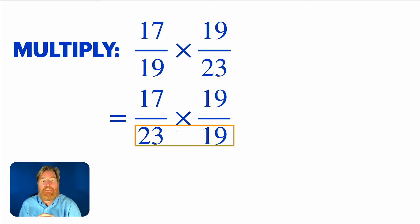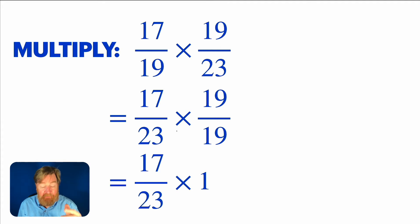But take a look at what happens when we commute those two bottom factors. Nineteen-nineteenths, guys, that's just one, right? Well, if that's just one, then seventeen twenty-thirds times one, one is the identity. It's just seventeen twenty-thirds. Isn't that nice?